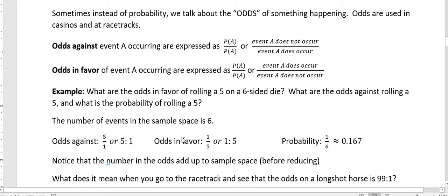What are the odds in favor? Well, remember, one time out of six, we would expect to get a five. And five times, we would expect to roll something else. So the odds in favor are one to five.